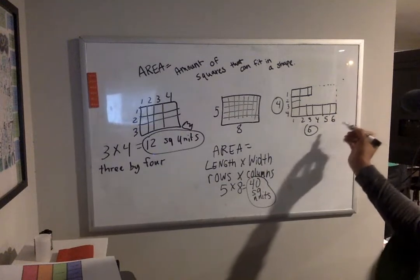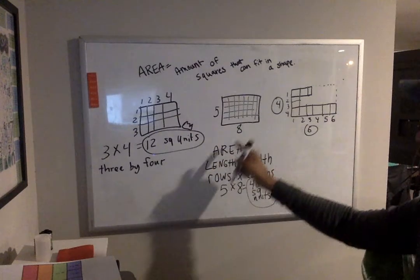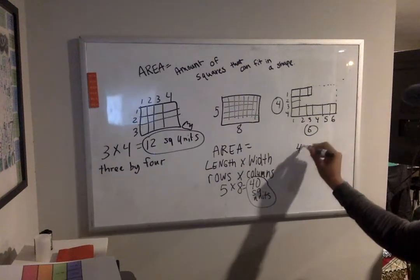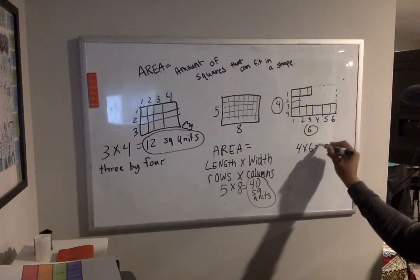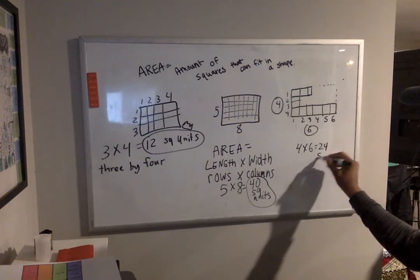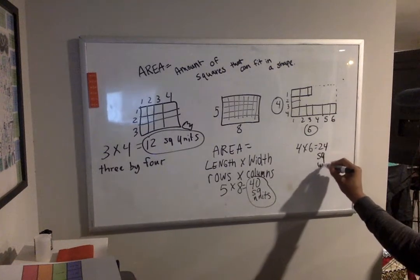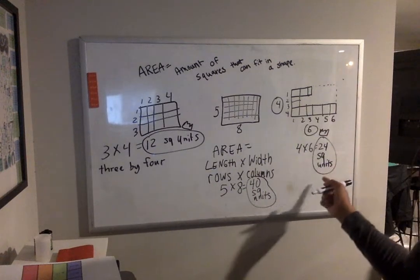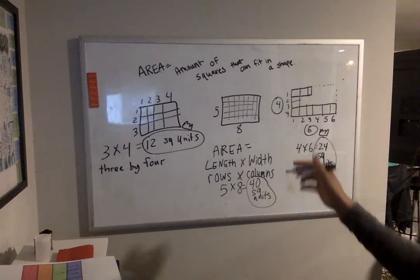So like I said, rows times columns, or length times width, four times six, would be 24 square units.